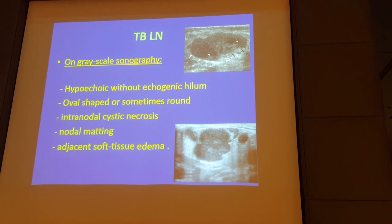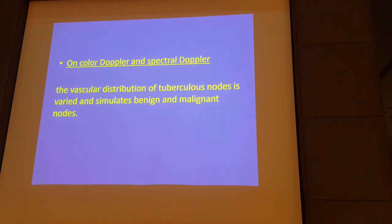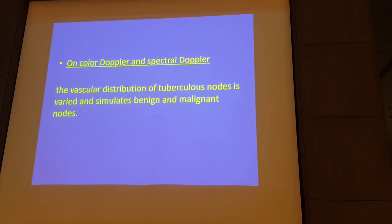We can also have some soft tissue edema adjacent to the tuberculous lymph nodes. Regarding the color Doppler and spectral Doppler, the vascular distribution in tuberculous lymph nodes is not specific — it can give criteria of benign behavior and can also give criteria of malignant behavior. So we set aside the color Doppler and spectral Doppler features of tuberculous lymph nodes until discussing the malignant lymph nodes.